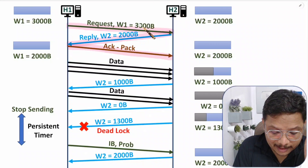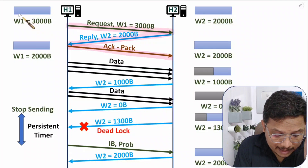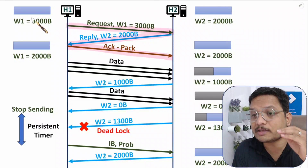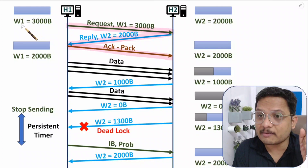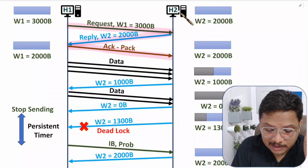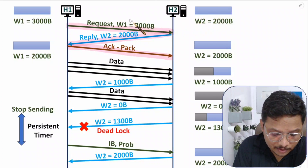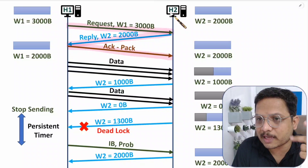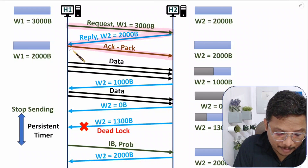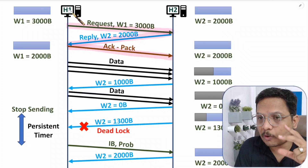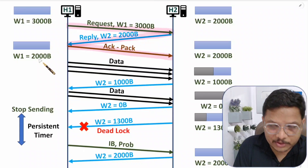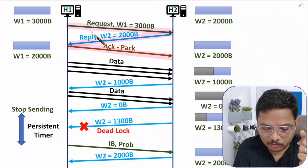When H1 forwards a request to H2, it mentions the window size available at H1. Window size explains how much data can be handled — how much buffer size is available at H1. Then H2 replies with its own window size details. Here H1 says its window size is 3000 and H2 says its window size is 2000. Now both H1 and H2 know each other's window sizes, and they agree upon the lower of the two — so the agreed window size becomes 2000.